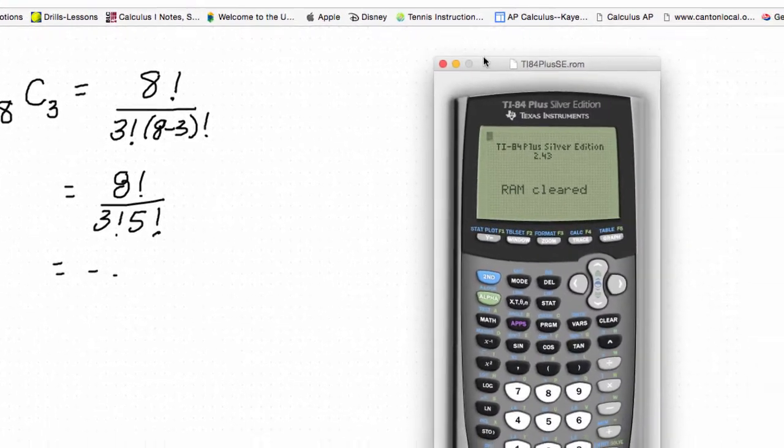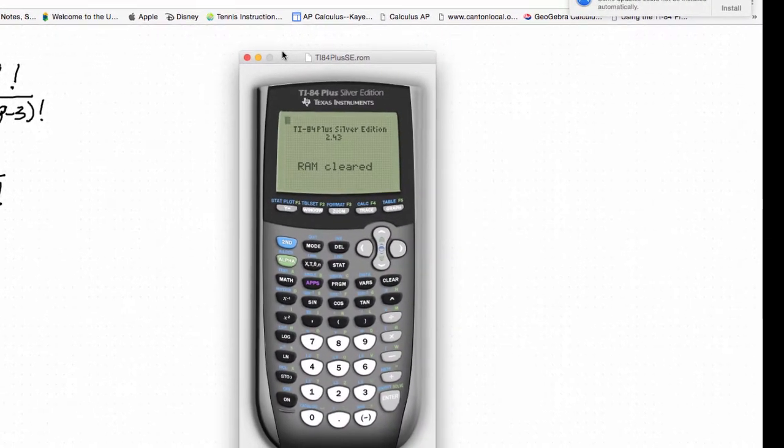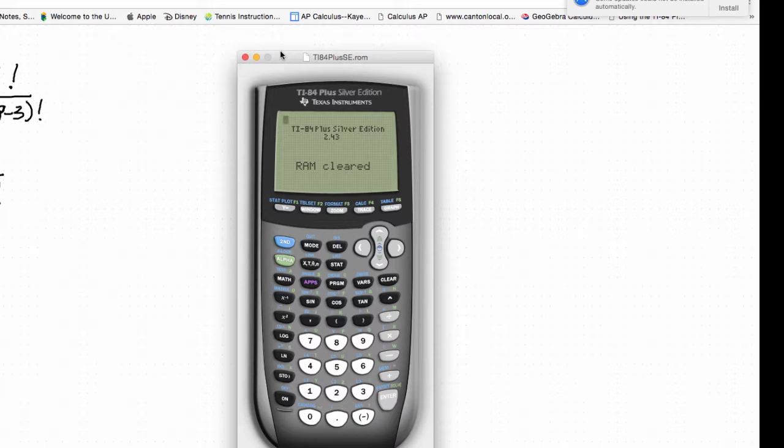Now, if you have a newer calculator like the color, you'll be able to actually have the math print mode on this, so if I want eight choose three on your graphing calculator, it's going to show that, but if I don't have it, I'll show you what you have to do.